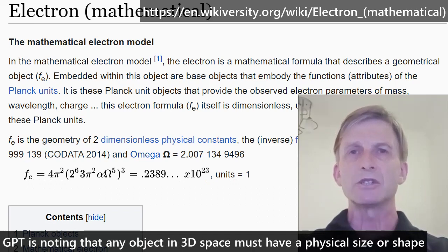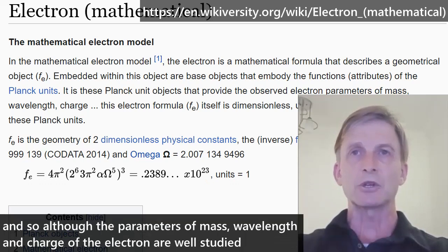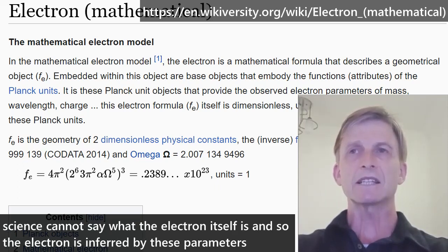Now GPT is noting that any object in 3D space must have a physical size or shape. And so, although the parameters of mass, wavelength and charge of the electron are well studied, science cannot say what the electron itself is, and so the electron is inferred by these parameters.